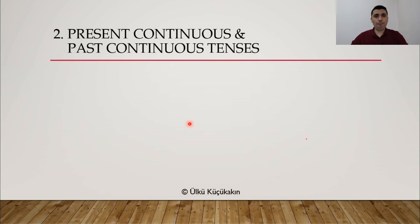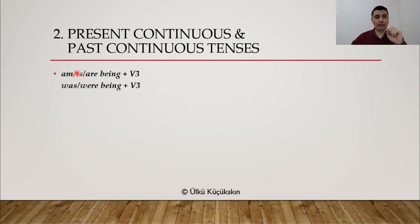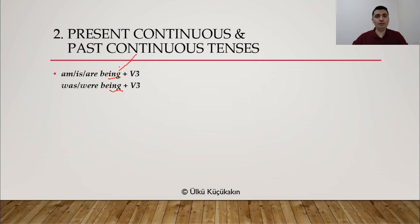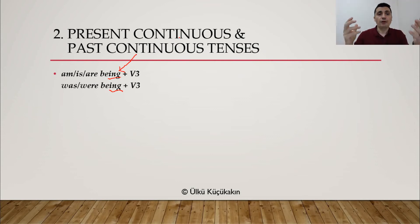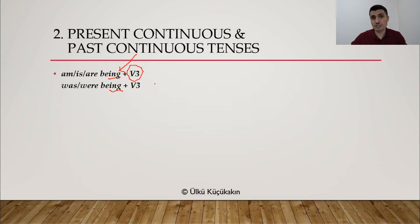If we look at present continuous and past continuous tenses, this time we have two BE's actually: am/is/are + BEING + verb 3. Why do we have BEING here? Because these are continuous tenses. To talk about progressive action, we need verb ING. So our verb ING is BEING. We need verb 3 for passive, so you cannot get rid of that. What we have is: am/is/are + BEING + verb 3, and WAS/WERE + BEING + verb 3.